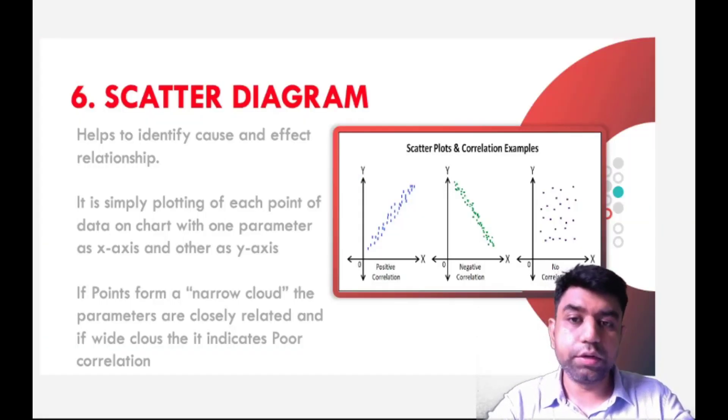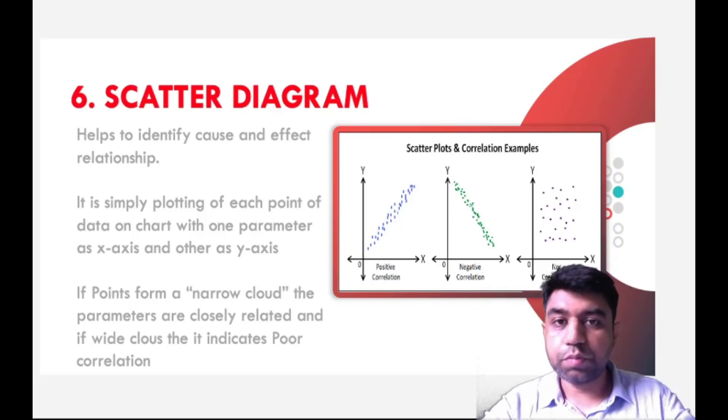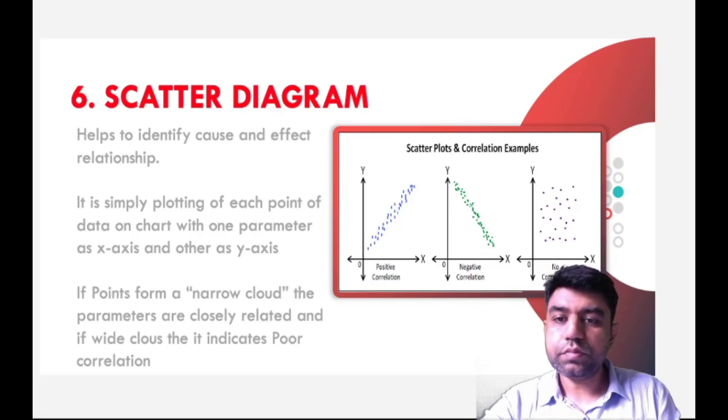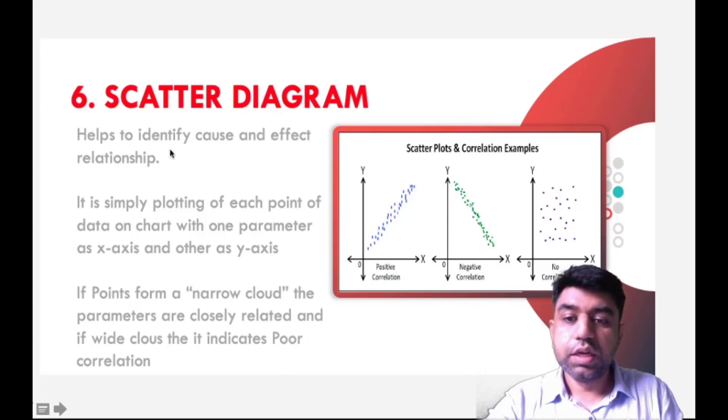The next Quality Control Improvement Tool is a Scatter Diagram. Most of the tools in this particular Quality Improvement Technique are proper representations or visual representations of the data so that you can take proper corrective action. Scatter Diagram helps to identify the cause and effect relationship. It is simply plotting of each point of the data on a chart with one parameter on x-axis and another parameter on the y-axis.